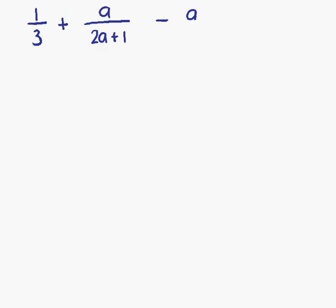Example number 3. We have 1/3 plus a over 2a plus 1, minus a. In this question, we have something slightly more complicated than the previous two examples — this time we have three terms instead of just two.